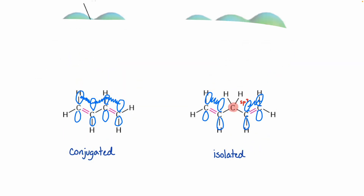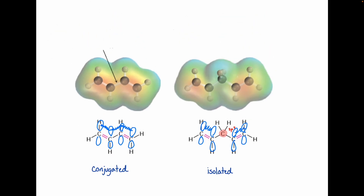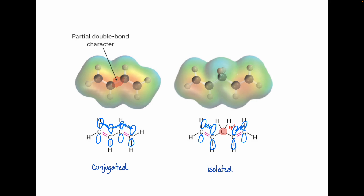The textbook has a much better ability to show this. For our conjugated diene, we see a bunch of electron density spread across that region — corresponding to those electrons spreading themselves out. We don't see that in our isolated diene because that sp3 hybridized carbon breaks the conjugation. Today we're going to talk about reactions of conjugated dienes.